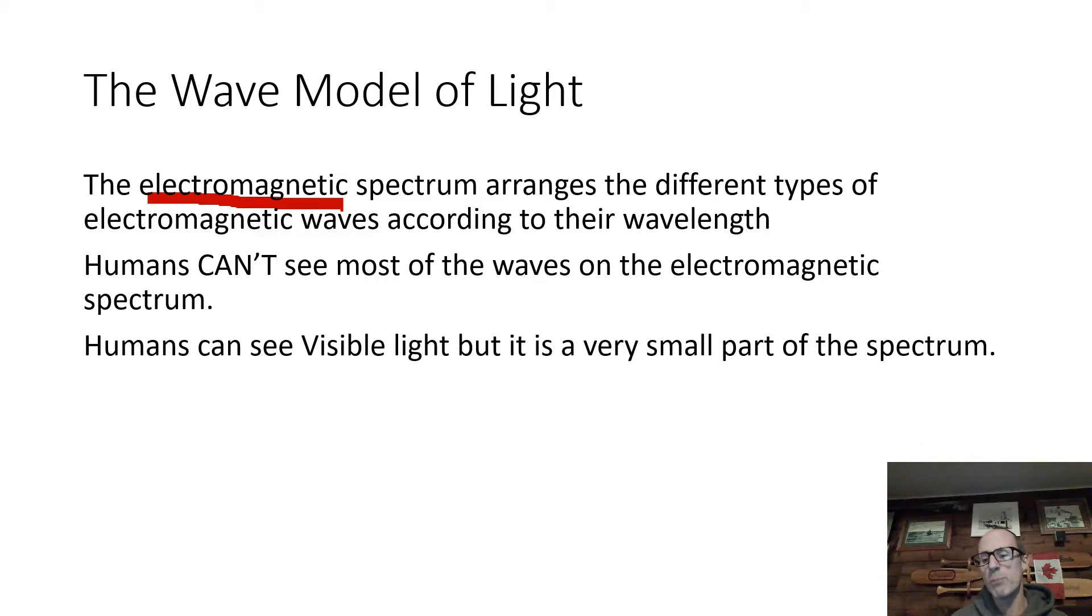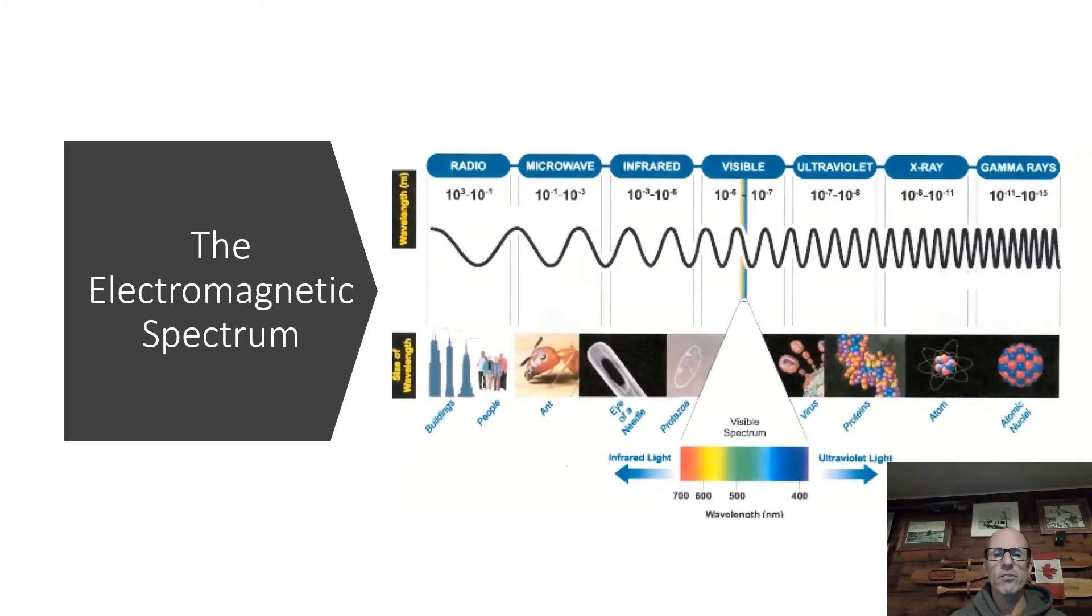We'll talk about ROYGBIV - red, orange, yellow, green, blue, and violet - a little bit later on. So here it is. This is a busy diagram, but we'll take a little look at it. This is called the electromagnetic spectrum.